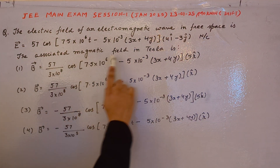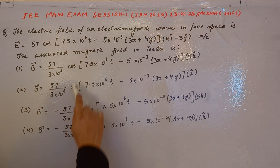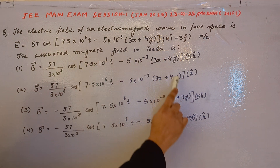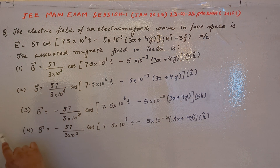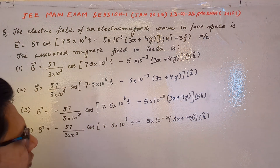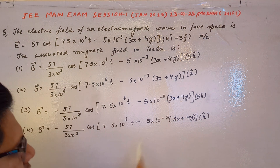The associated magnetic field in Tesla: option one B equals 57/(3×10⁸) cos[same expression] times 5k cap. Option two B equals 57/(3×10⁸) cos[same expression] times k cap. Option three B equals minus 57/(3×10⁸) cos[same expression] times 5k cap. Option four B equals minus 57/(10×10⁸) cos[same expression] times k cap.